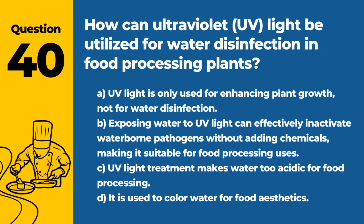Question 41. Discuss the impact of improper food storage temperatures on the growth of psychrotrophic bacteria. a. Psychrotrophic bacteria are eliminated at freezing temperatures, so storage temperature is irrelevant. b. Improper temperatures, especially those above refrigeration and below cooking temperatures, can encourage the growth of psychrotrophic bacteria, leading to spoilage and potential foodborne illness. c. Psychrotrophic bacteria growth is only a concern in tropical climates. d. All bacteria, including psychrotrophic, are inactive in cold storage, making temperature control unnecessary. Answer: b. Proper cold storage is essential to inhibit their growth.